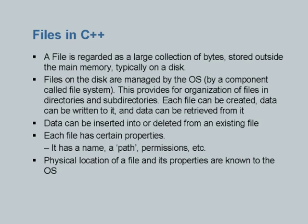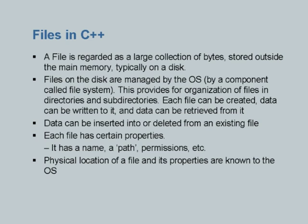Within a directory there could be a file. Each file can be created, data can be written to it, and data can be retrieved from it. Whenever we edit a program and store it as .cpp, we are adding data to that file. Whenever we give it as a parameter to the C++ compiler, data is retrieved from it. Data can also be inserted into or deleted from an existing file — that is exactly what you do when you use an editor like gedit.